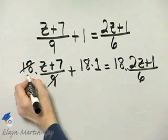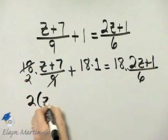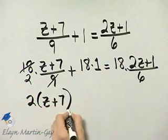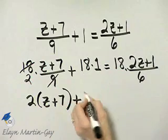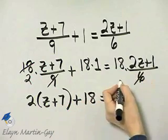9 divides into 18 two times, so I have 2 times parenthesis z plus 7 plus 18 times 1 is 18, is equal to 6 divides into 18 three times.